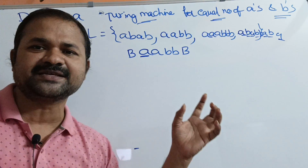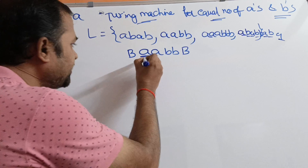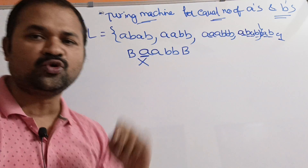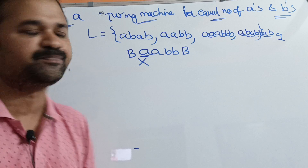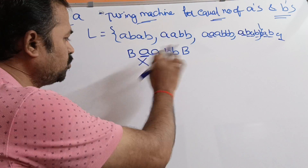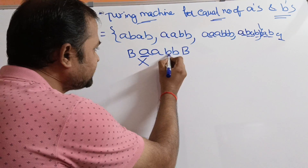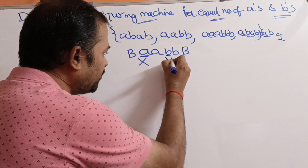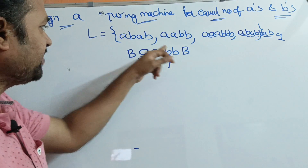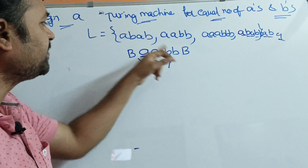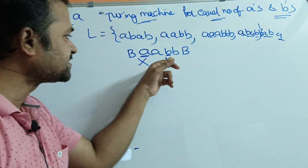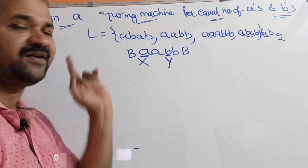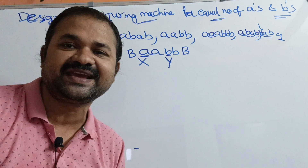Firstly, replace A by X and move towards the right till we get B. This is A — don't change A. Next, this is B, so replace B by Y. For this A, we have the corresponding B. So, A is replaced by X and B is replaced by Y.